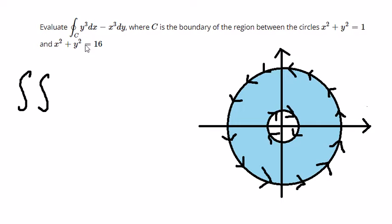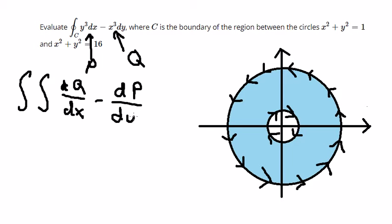This is P, this is Q. So we have Q over x minus P over y. We call this dy dx.